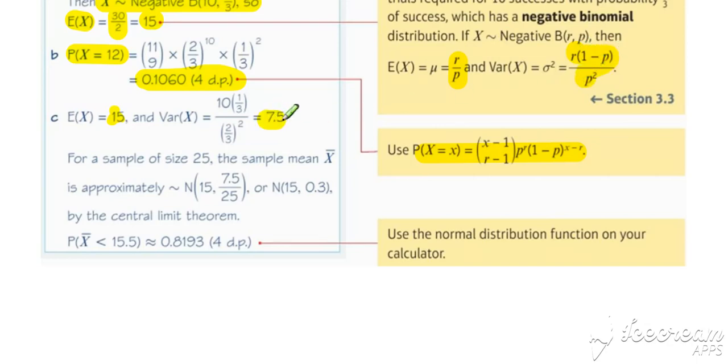The sample size is 25—not bigger than 30 but close enough. We can still provide an estimate that could be improved with a larger sample. X-bar will be approximately normally distributed with a mean of 15 and variance of 7.5 divided by 25, the variance divided by n.